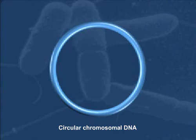The circular chromosomal DNA of bacteria must be compacted about 1000-fold to fit within a bacterial cell.